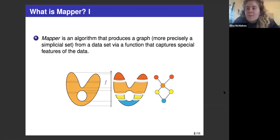So I'll begin with a brief description of Mapper before moving on to the variation, and there are some links to more descriptive videos if you want more background on the algorithm. Mapper is an algorithm that produces a graph, more precisely a simplicial set, obtained from a data set via a function that captures special features of the data based on the user's choice.